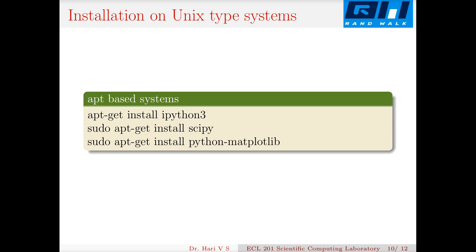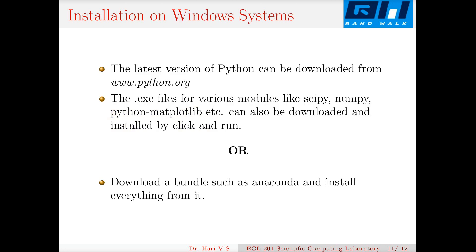For APT-based systems like Ubuntu or Debian, go to the terminal and type: sudo apt-get install ipython3, sudo apt-get install scipy, and sudo apt-get install python-matplotlib. For Windows, you can go to python.org and download exe files for various modules, or download a bundle such as Anaconda which includes everything bundled together and install from that.